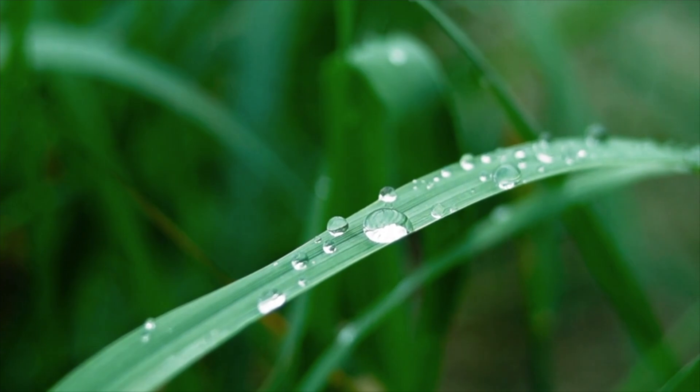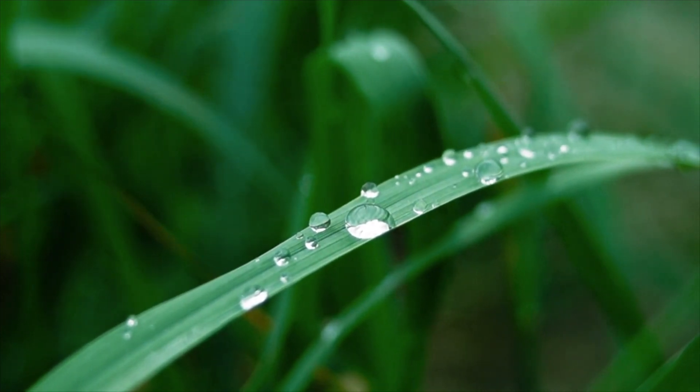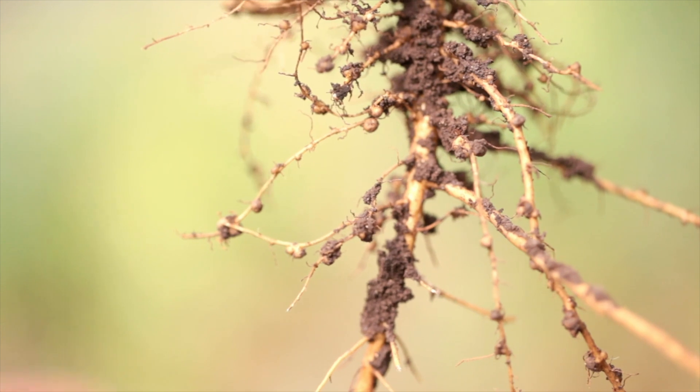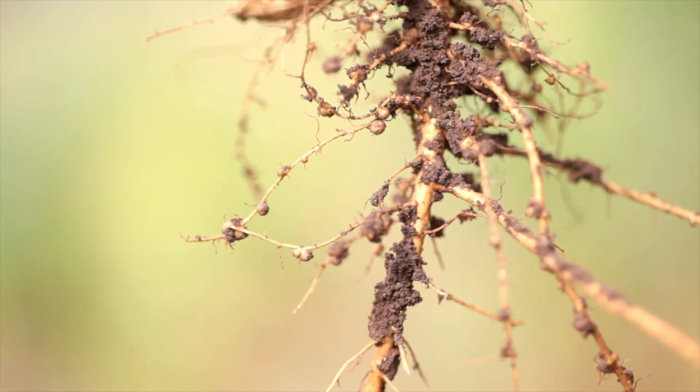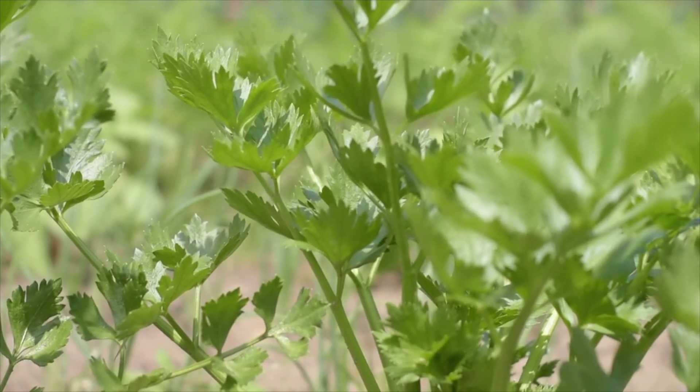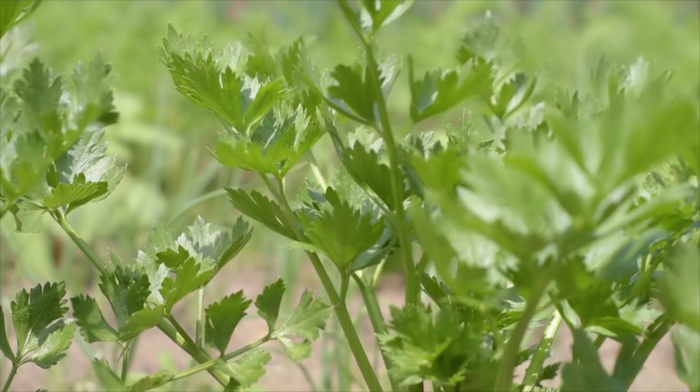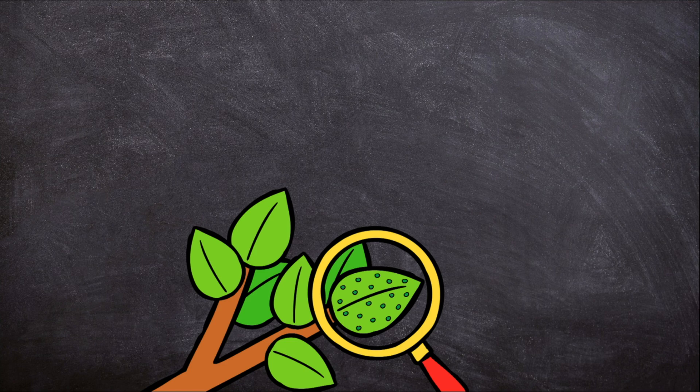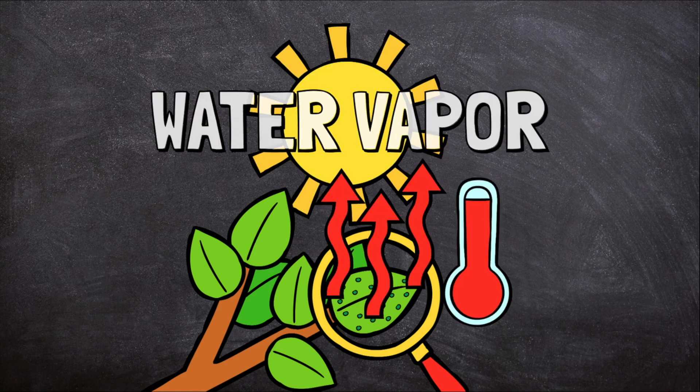Transpiration is similar to evaporation, but the water comes from the leaves of plants. Plants absorb water through their roots. However, they only use a little bit of this water to grow and live. The rest of the unused water makes its way to the leaves. There it is heated by the Sun and becomes water vapor.